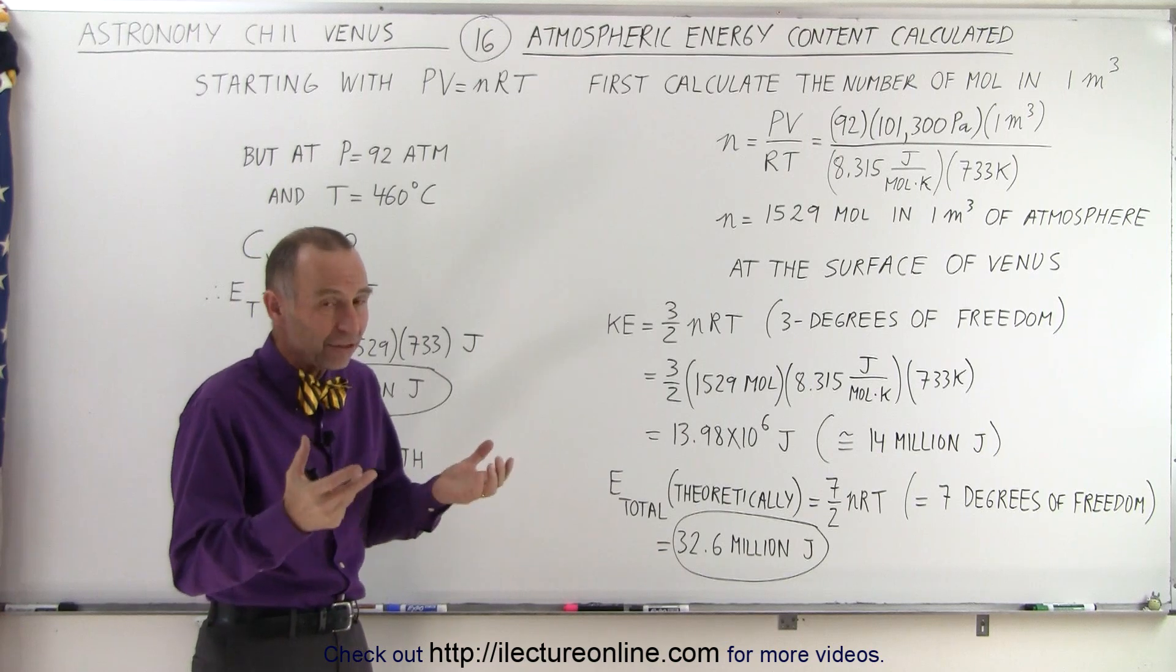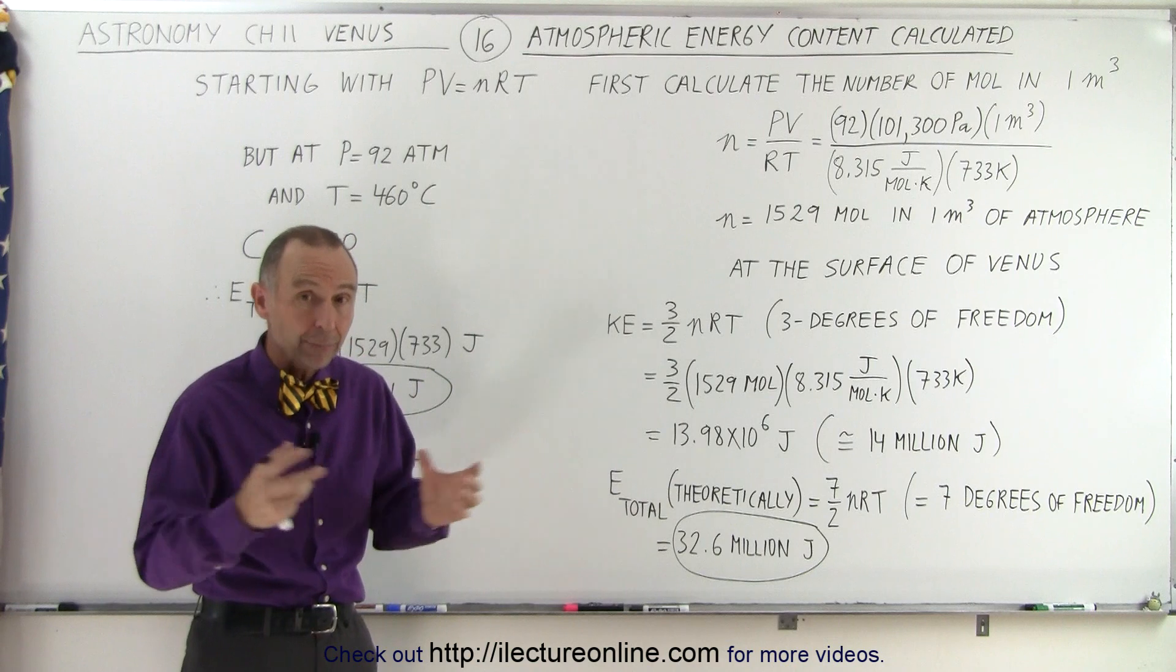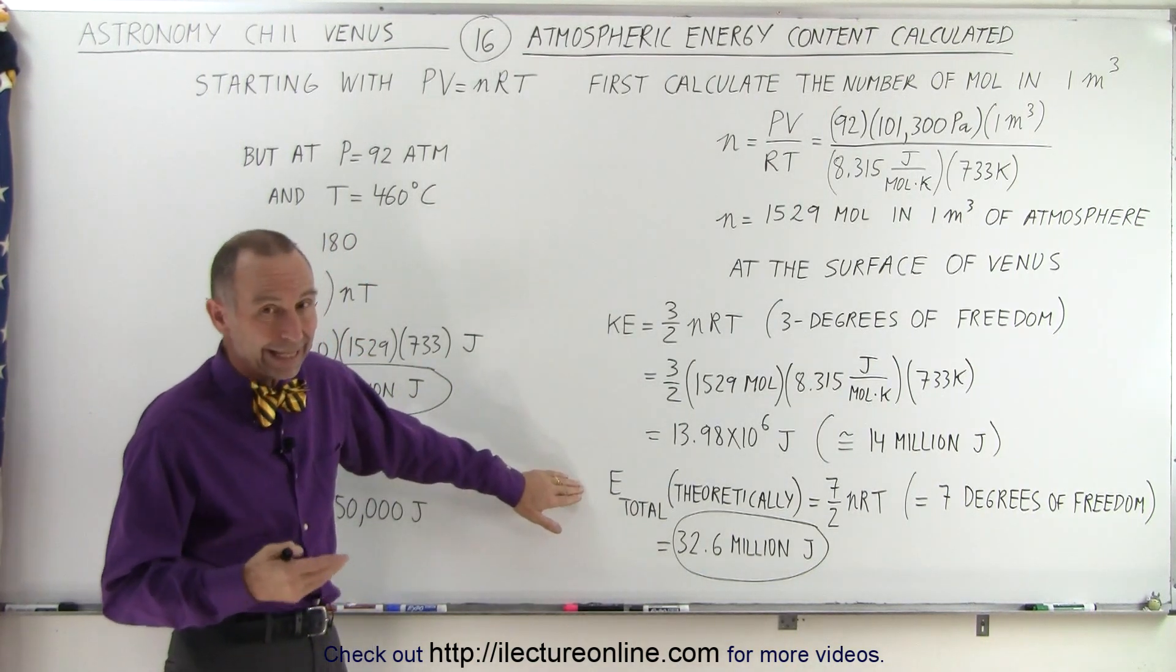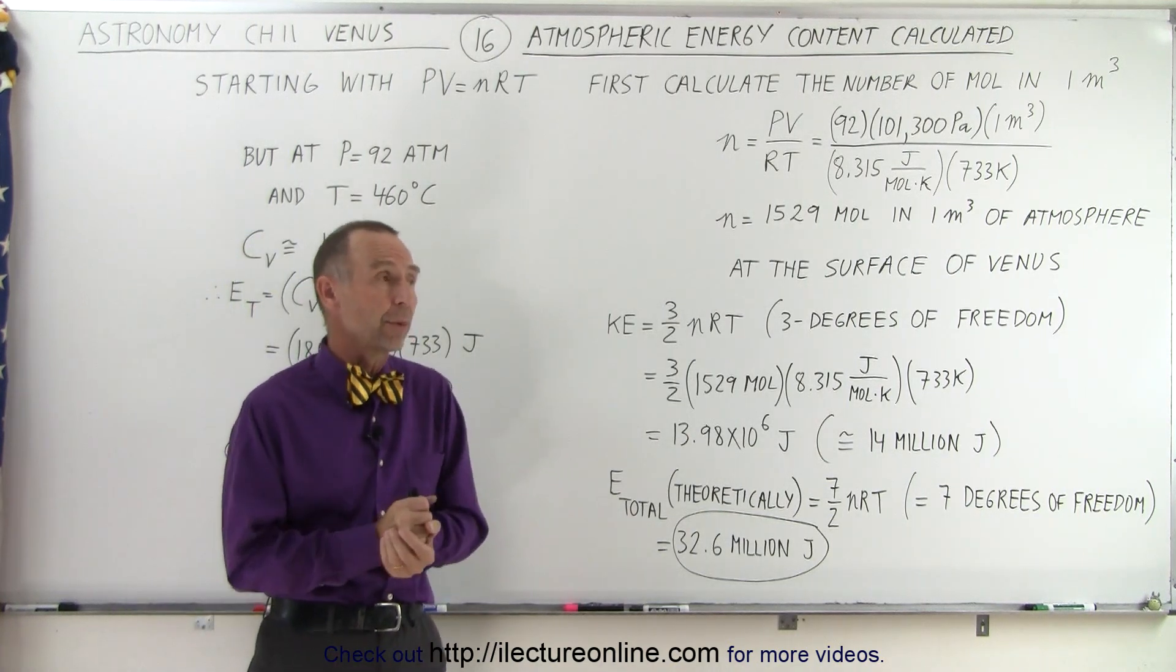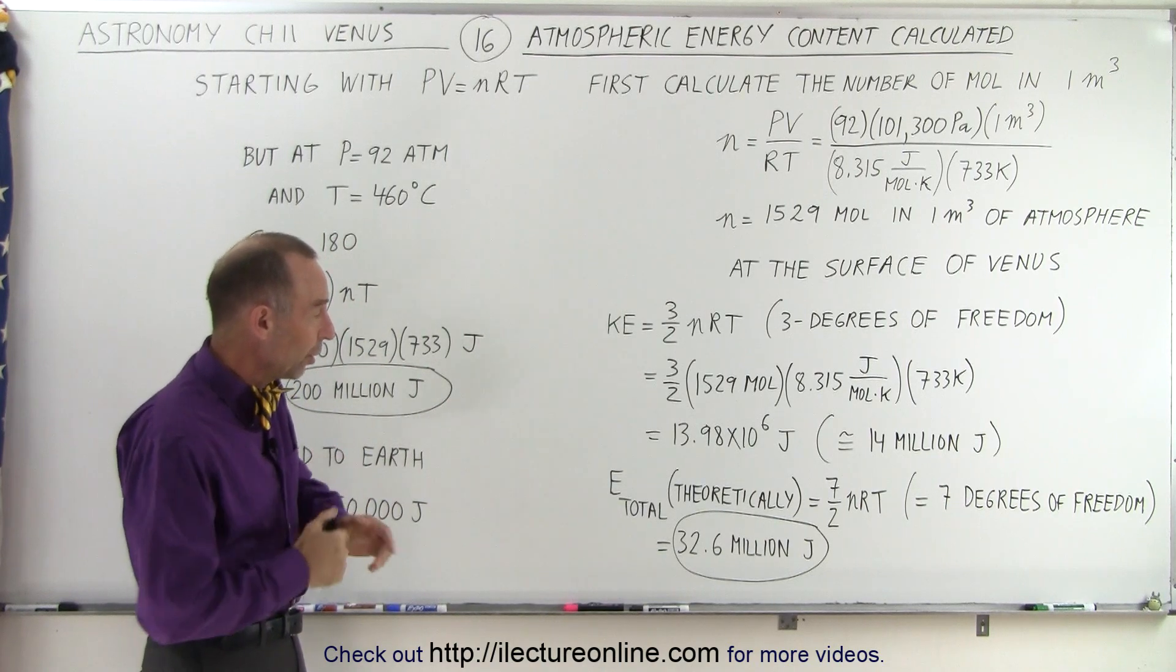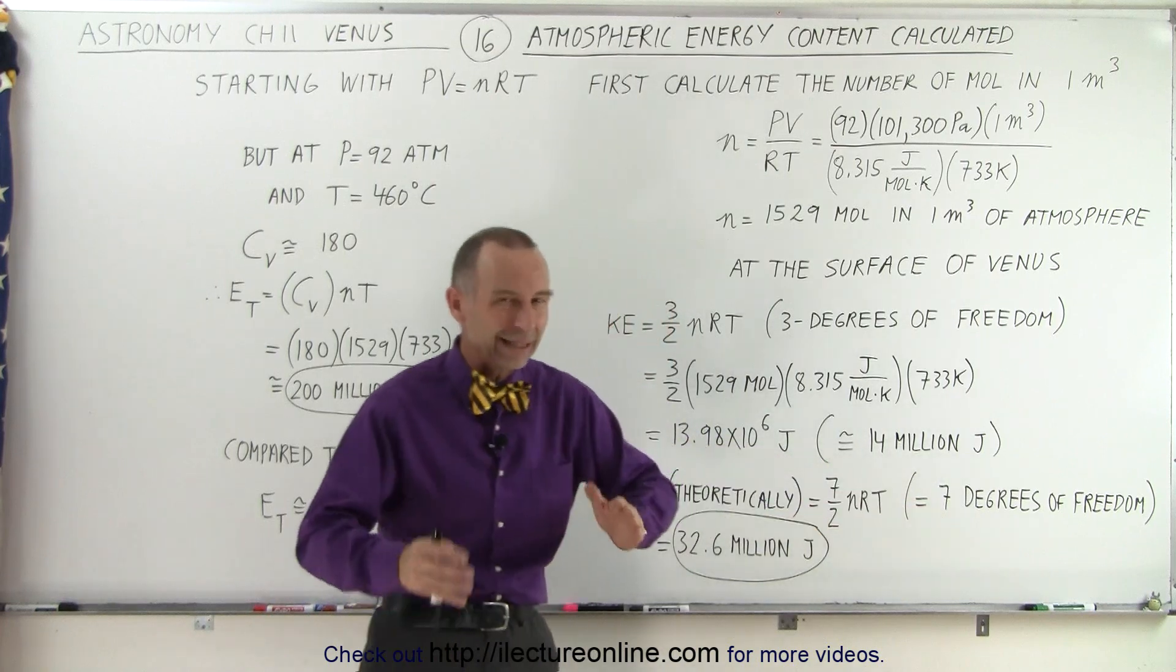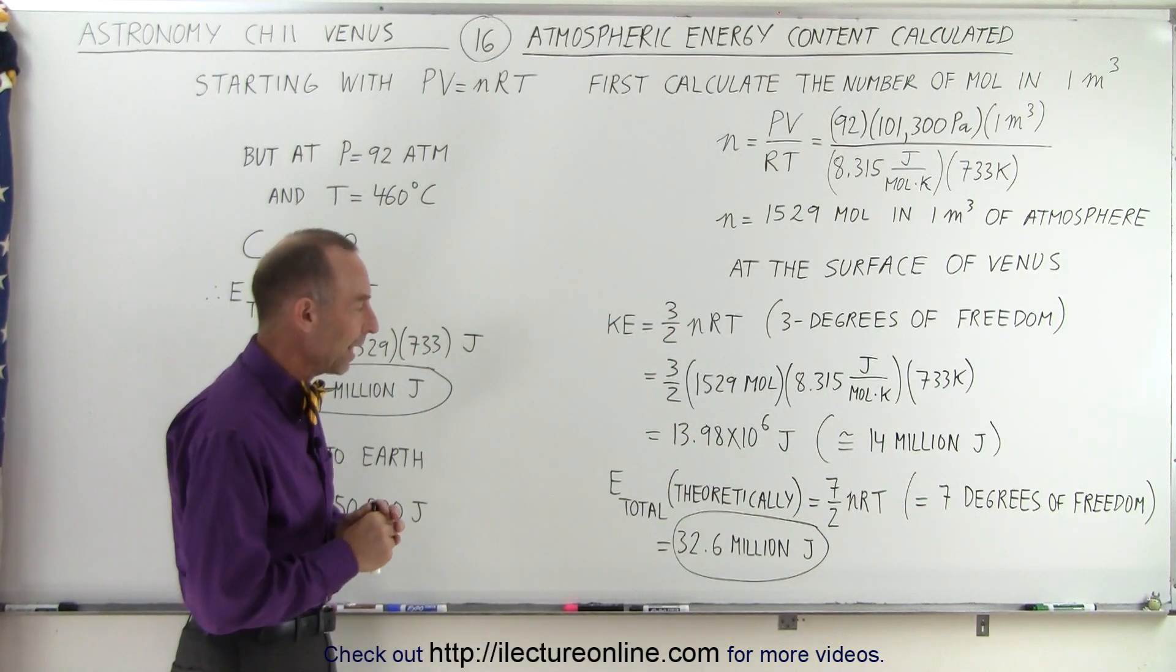But of course, gas molecules also have energy due to the rotational motion and due to the vibrational motion. So theoretically, for a triatomic molecule, and carbon dioxide is a triatomic molecule, and that's the predominant molecule in the atmosphere of Venus, we need to use seven halves instead of three halves for the seven degrees of freedom. Again, this is just a theoretical value. The actual value will be slightly different than that.